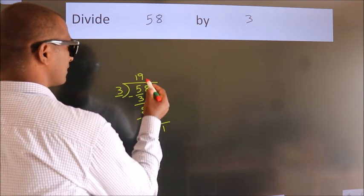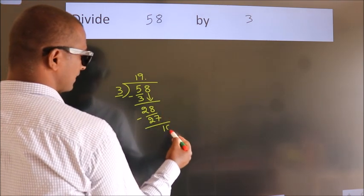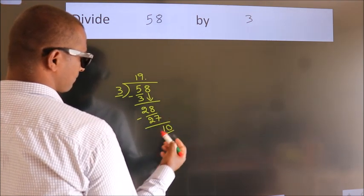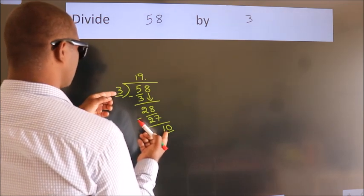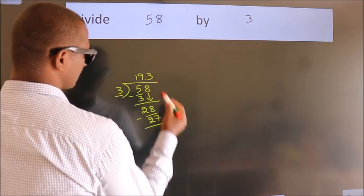So, what we do is, we put a dot, take 0. So, 10. A number close to 10 in the 3 table is 3 threes 9.